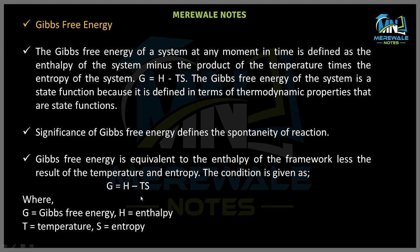So the formula is G = H − TS, where G is the Gibbs free energy, H is the enthalpy of the system, T is the temperature of the system, and S is the entropy of the system. H is expressed in kJ/kg, temperature in Kelvin, and entropy in kJ/(kg·K), so the unit of Gibbs free energy is also kJ/kg.